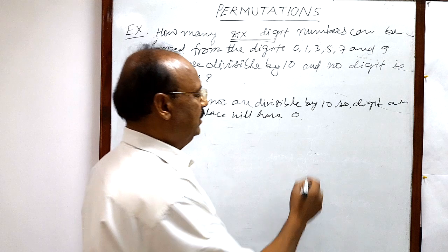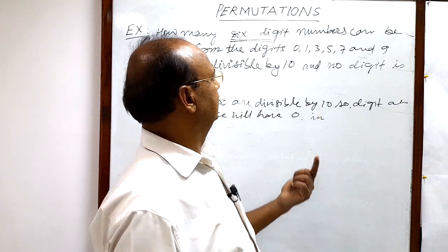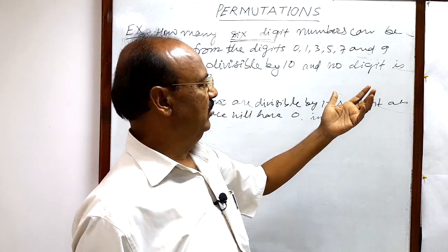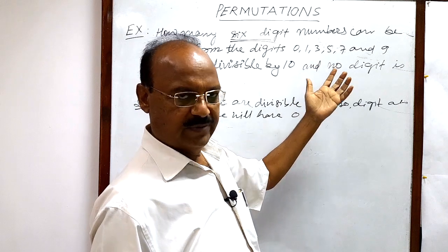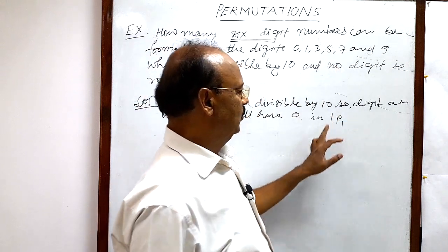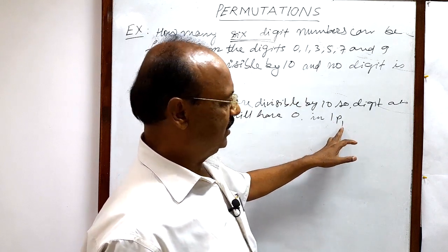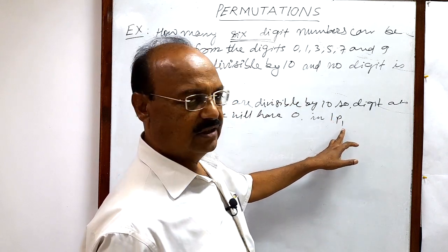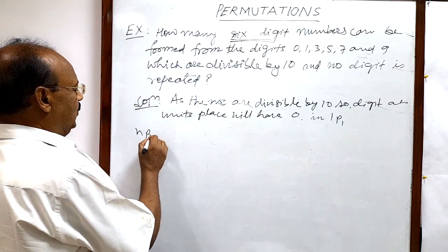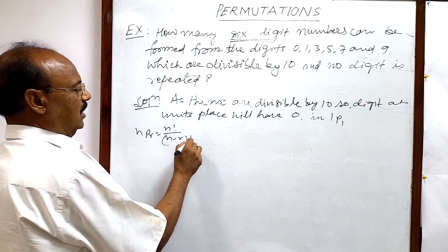In how many ways? Only one way, because we are having only one 0 that will be selected in only one way for units place. So in 1P1, the total number of 0 is 1 here, and which will be selected, so n is 1. We will use the formula nPr is equal to n factorial by n minus r factorial.